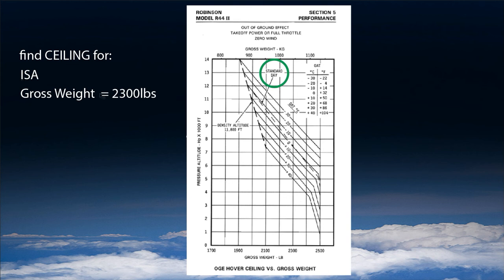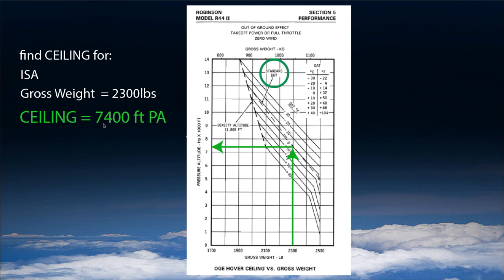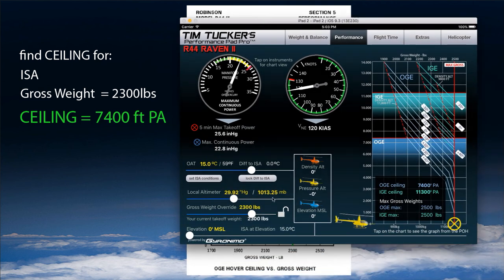Let's try another example: find the ceiling for ISA and a gross weight of 2,300 pounds. We go up from 2,300, intercept the ISA line, and go left to find a result of roughly 7,400 feet. When we do this in the app — make sure you have 2,300 gross weight set, either using the gross weight overwrite or via the weight and balance page — the app computes 7,400 again. Here we can easily change the difference to ISA, elevation, and other parameters.